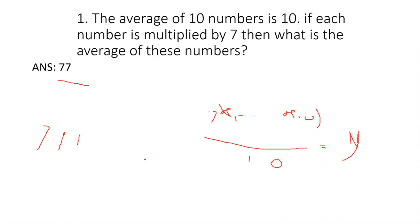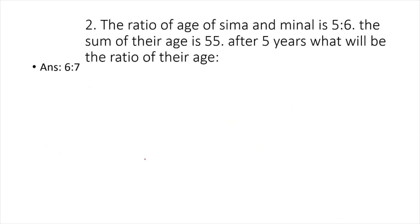Next, the ratio of age of Sima and Minal is given as 5:6. The sum of their age is given as 55. Let's say the age of Sima is X, of Minal is Y, and the sum of their age is given as 55. After 5 years, what will be the ratio of their age?